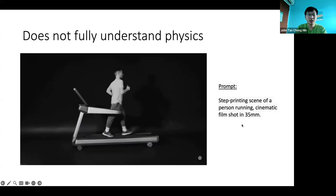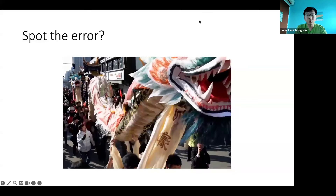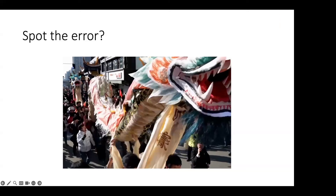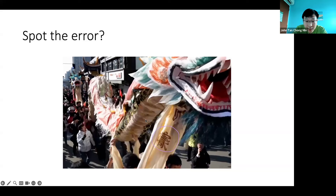It looks quite plausible. If you're a video generator and you don't know how the real world operates, a machine that runs in the opposite direction of the treadmill is perfectly plausible — you just need to change the track direction. So it probably can still understand physics in some sense; it's just that the physics may not match the real world. This is an issue with a non-embodied agent who doesn't really observe how the world works, just relying on videos. The motion looks okay. They also asked to generate a dragon dance — can anyone spot what's wrong with this picture? Yes, the Chinese character is wrong.